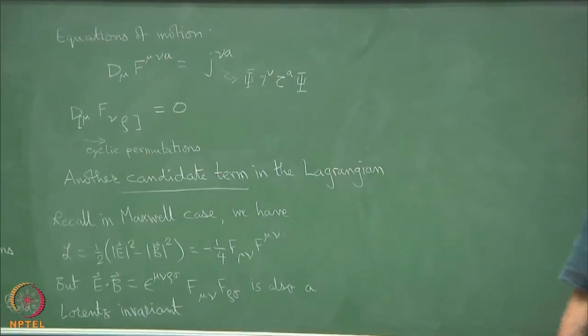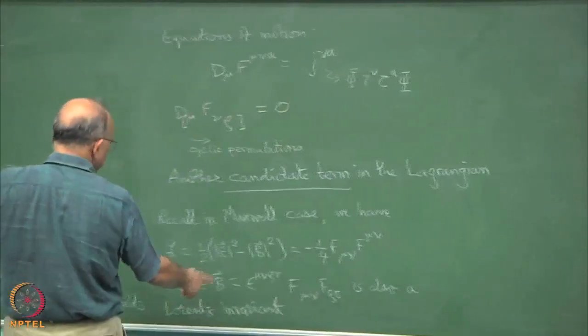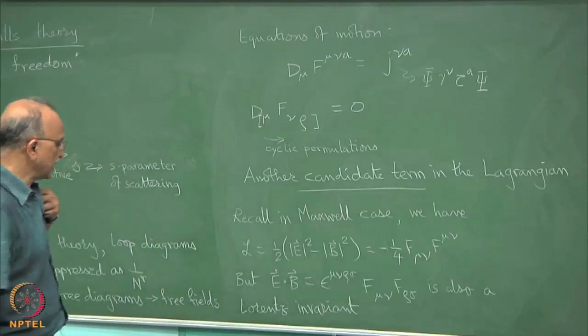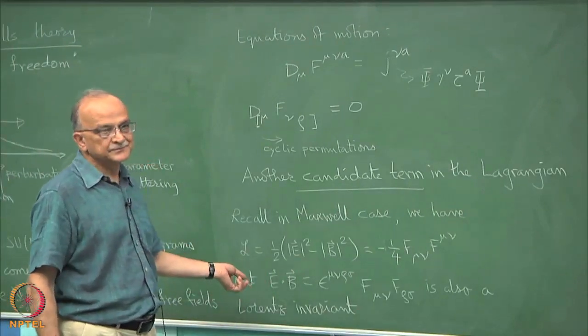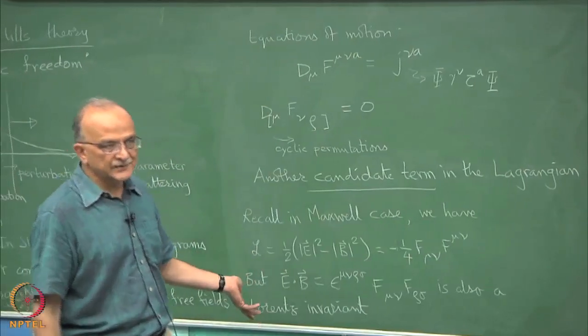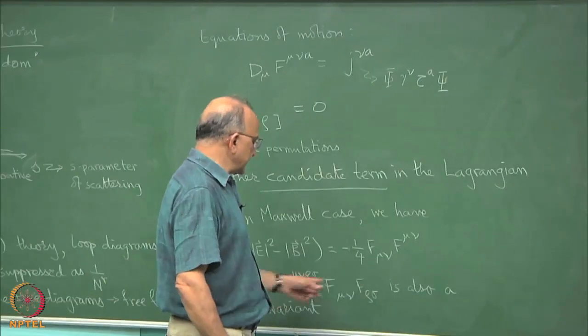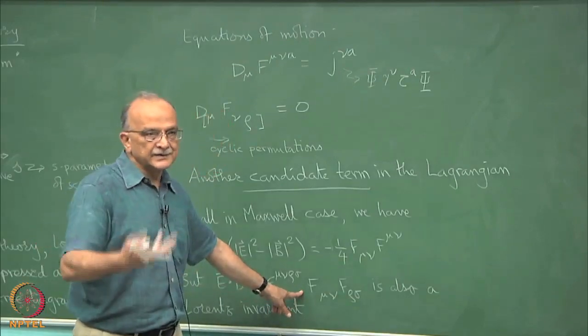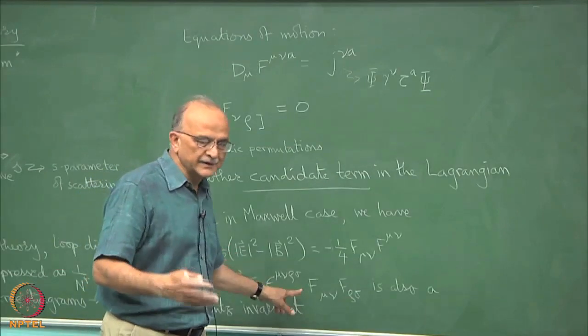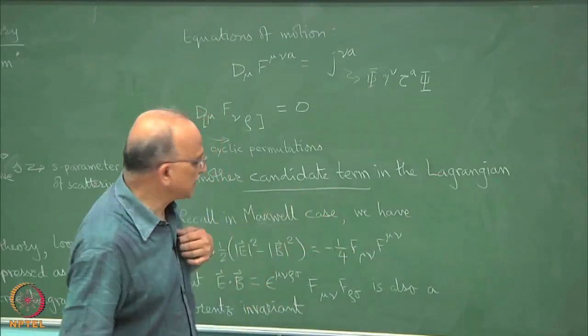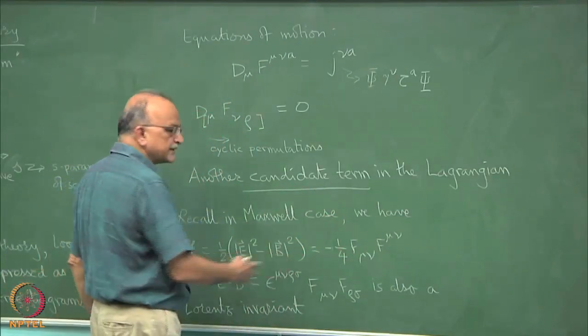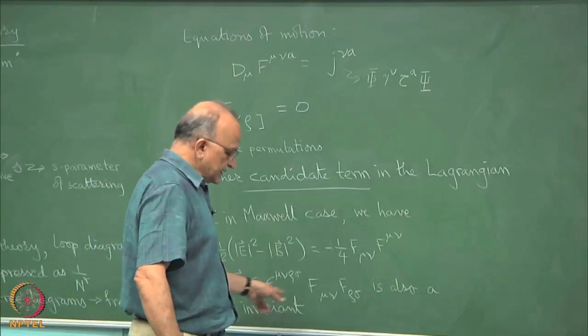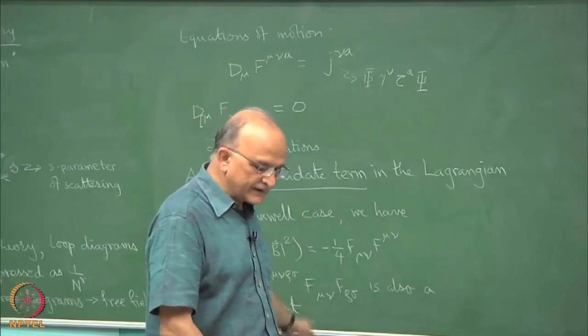This we do not put in the Lagrangian by arguing that this is not parity invariant. As you remember in the poor man's language E is a true vector and B is a pseudo vector. If you do a space inversion this term will change sign. You do not want to include such terms in the Lagrangian. In the more sophisticated language, the epsilon tensor is invariant under the flip of all the 4 coordinates, it is the volume element. The volume element does not change sign whereas the other things will change sign together. It is a pseudo scalar it is not a genuine scalar.